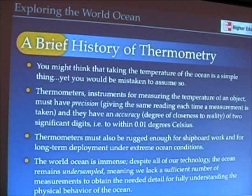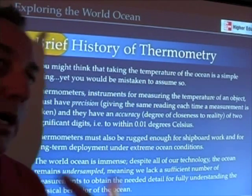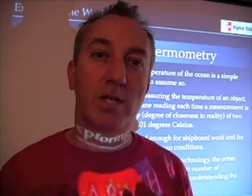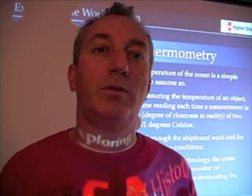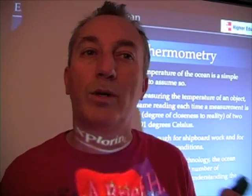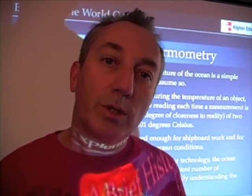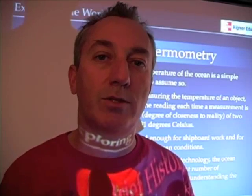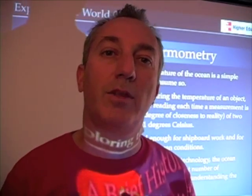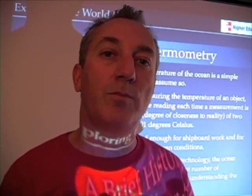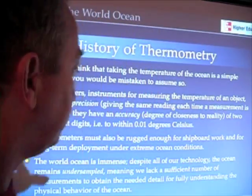Despite all of our best attempts, even here in the year 2008, the ocean, because of its vast size, remains what we call undersampled. Undersampling means that we don't yet have enough measurements of the ocean to fully tell what's going on. We might say it's warm over there, but right next to it, it might be warmer or colder, and we really can't tell that. We don't have the resolution over the entire scale of the ocean to determine that. But as we'll see, we've made some vast improvements in that area — we're getting closer.